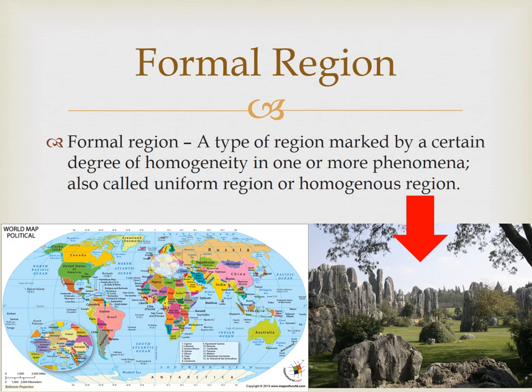This image helps us understand a common misconception about formal regions: just because there is a degree of uniformity, of homogeneity, doesn't mean it needs to be 100% homogeneous. Look at our karst picture — is every square inch of that land covered in limestone? No. But there is a high degree of these karst formations in this area, which sets it apart from the areas that surround it.